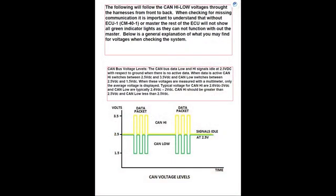This video will follow the CAN high-low voltages throughout the harnesses from front to back. When checking for missing communication, it is important to understand that without ECU-1, CM41 — better known as the master ECU — the rest of the ECUs will not show all green indicator lights, as they cannot function without the master.